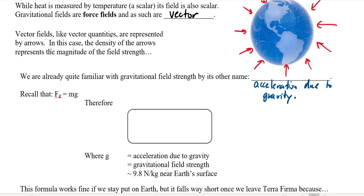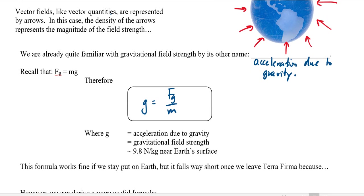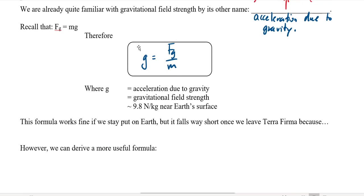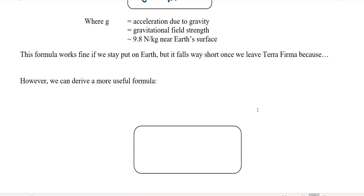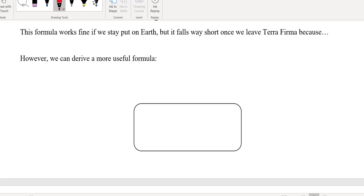We know that Fg equals mg, which means g is just Fg over m. This g value is our acceleration due to gravity and also our gravitational field strength — on Earth it's approximately 9.8 newtons per kilogram. To find the g value, you take a 1 kilogram test mass, place it in the field, measure its weight, and divide by the mass — that tells you the strength of the field. But it's going to be more useful to come up with another formula we can use anywhere.